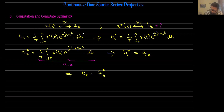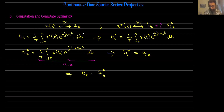And if I take the conjugation on both sides again, this implies that b_k is actually equal to a_{-k} conjugate. So this is really a_{-k} conjugate. Now there are important implications of this conjugation property, in particular for the case when x(t) is real. So if x(t) is real, the Fourier series coefficients of x(t) are going to satisfy some properties.